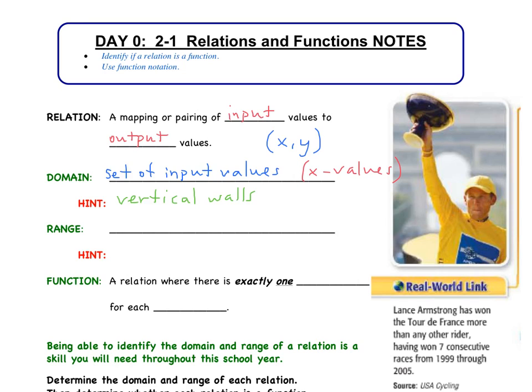So then what is a range? Well, if the domain is a set of input values, the range is the set of output values, or another way we can think of it is the y values. The hint I like to use for range when we're dealing with actual graphs is, can we build a floor below our graph or a ceiling above it to contain it?